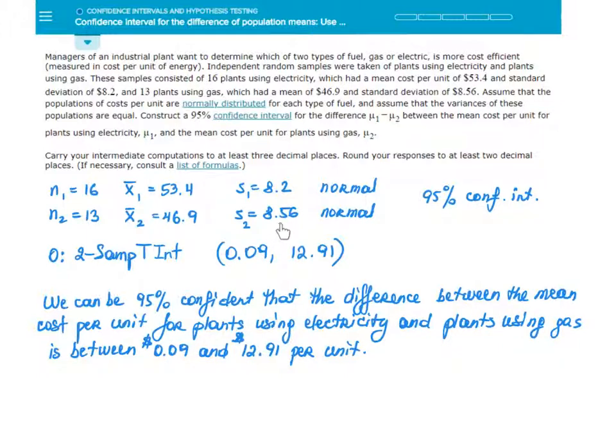It is really important to note that these samples come from normally distributed populations as stated in this sentence right here. I also would like to point out something very important. So assume that population costs are normally distributed and also that the variances of these populations are equal.